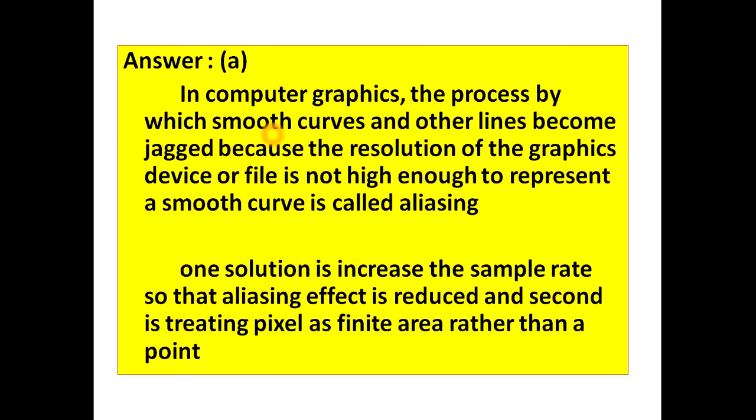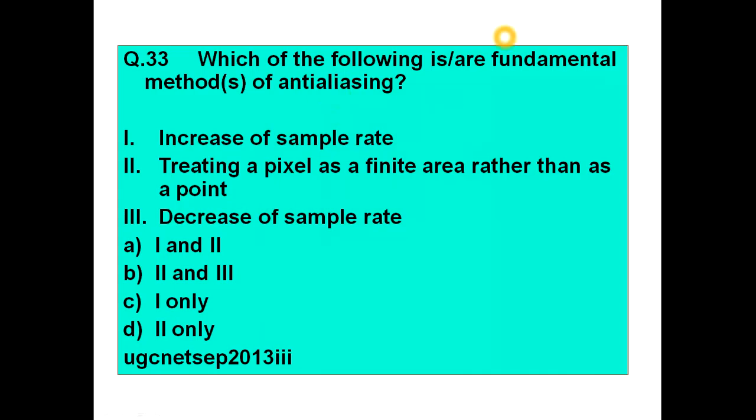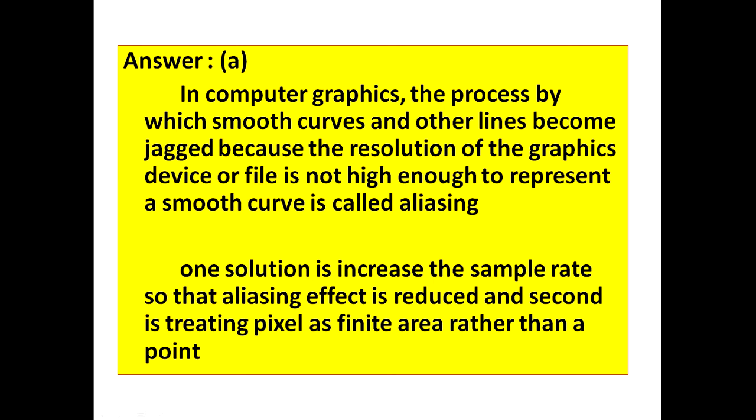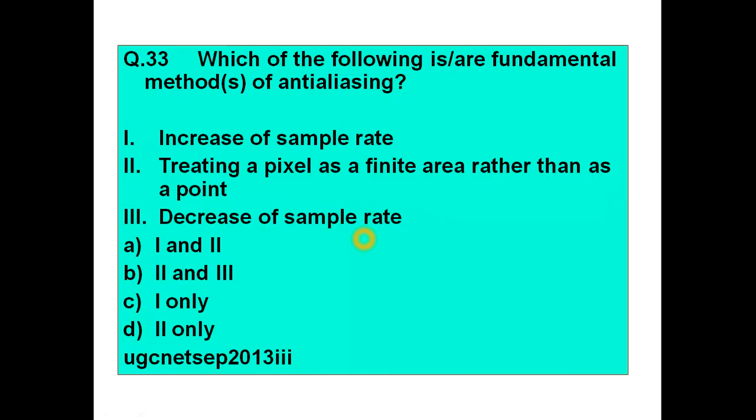Answer to this question is option A, that is 1 and 2. The fundamental methods of anti-aliasing are: increase of the sample rate and treating a pixel as a finite area rather than as a point. In computer graphics, the process by which smooth curves and other lines become jagged because the resolution of the graphics device or file is not high enough to represent a smooth curve is known as aliasing. One solution is to increase the sample rate so that aliasing effect is reduced, and second is treat every pixel as a finite area rather than as a point.